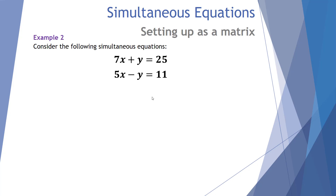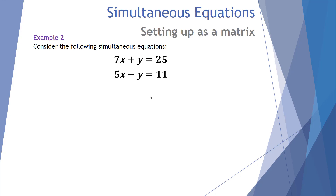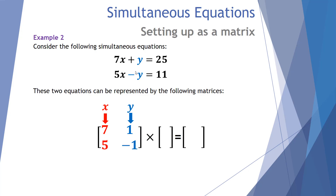In example number 2, let's look at this pair of simultaneous equations and set them up using a matrix. The x values — 7 and 5 — fill up the first column of our coefficient matrix. That first matrix, by the way, is called the coefficient matrix: it's the numbers in front of the x's and y's. For the second column, the y's: when we have a plus y, that's effectively an invisible plus one y, so we put in a 1. The next is a minus y, or minus 1, so we put in minus 1.